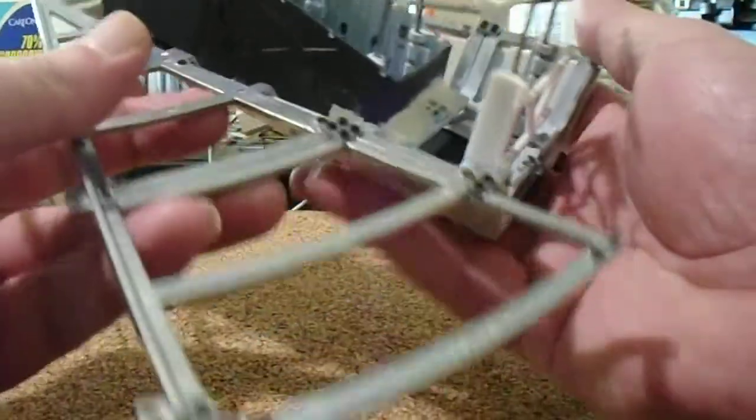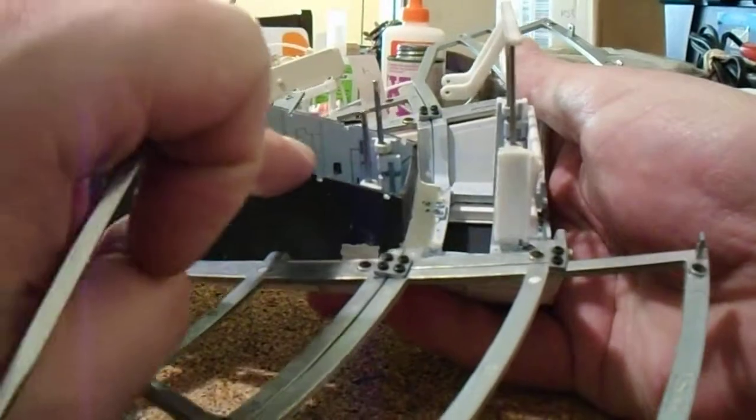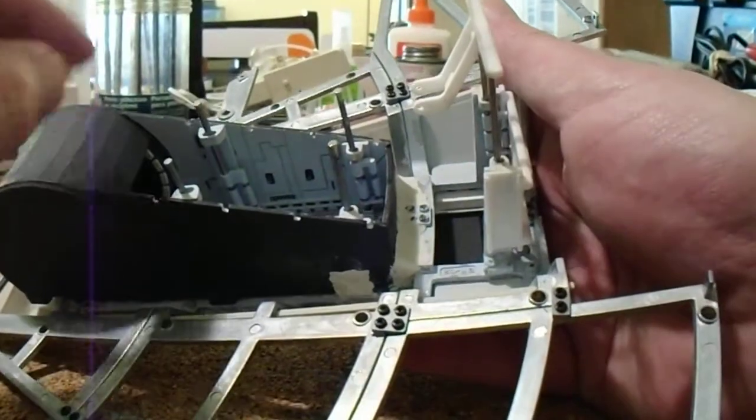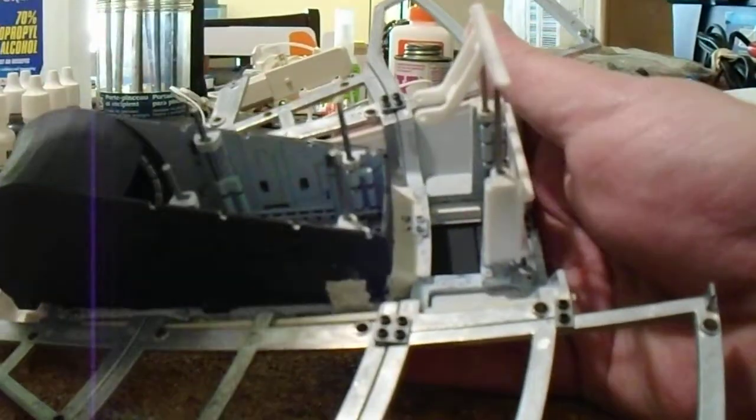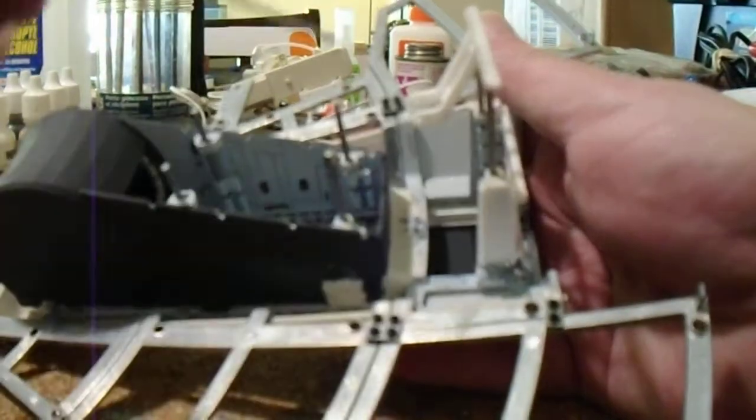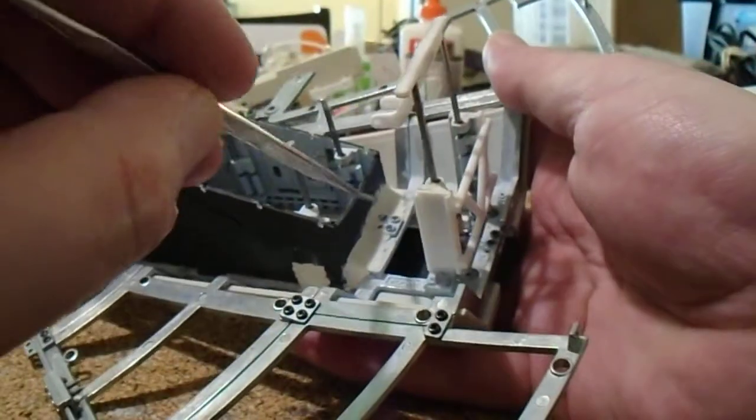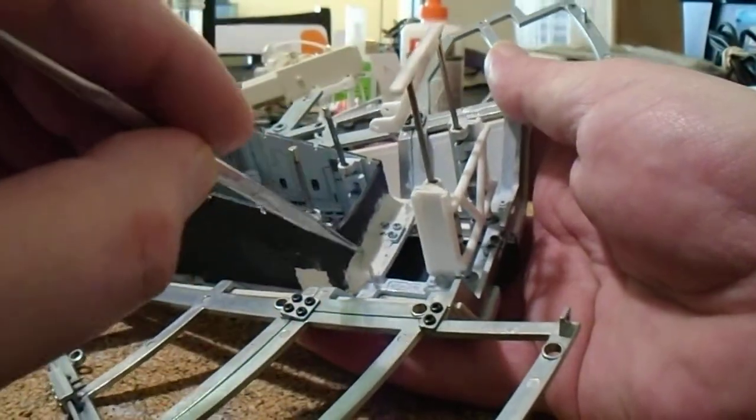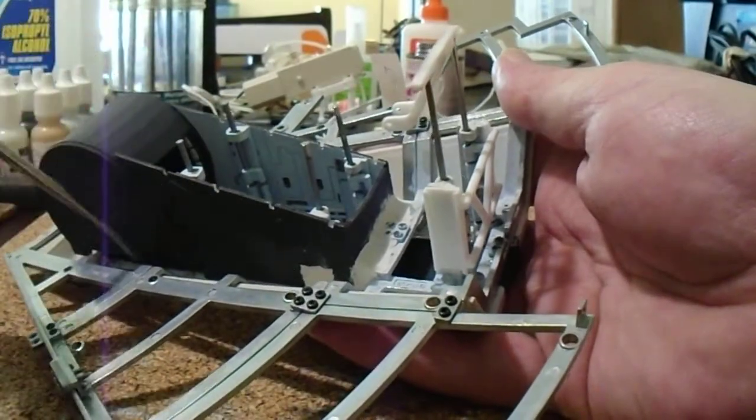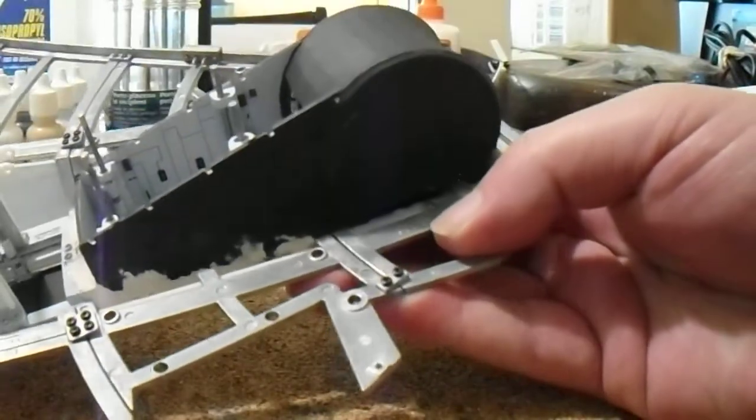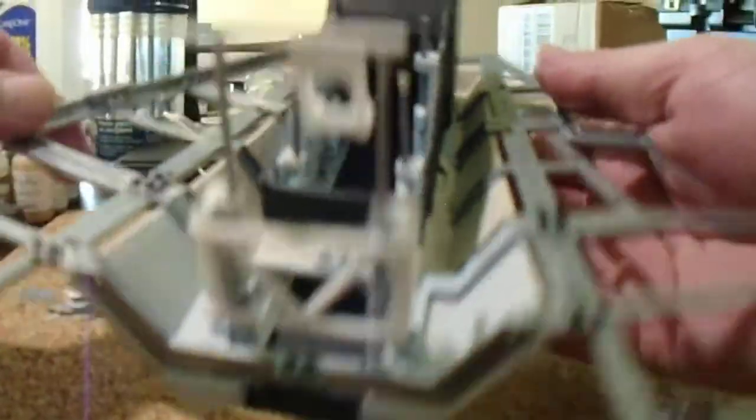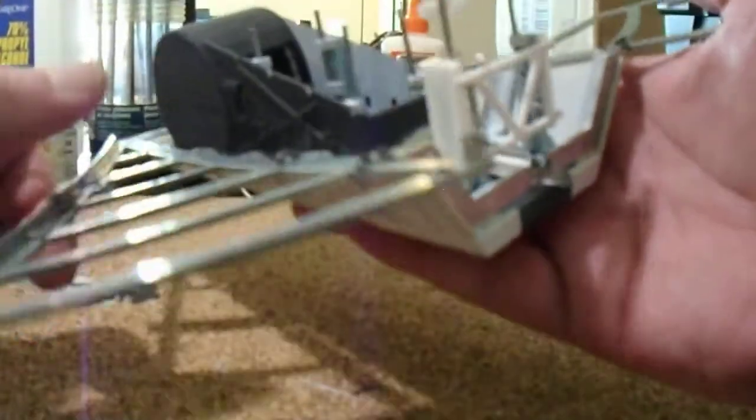We last left off gluing the hallway and curved corridor to the metal frame. That's done. Now we need to make sure these areas are light blocked with body filler, modeling putty, or gap filling glue. I've done most of that for the purpose of this video. It's not complete but I want you to get the idea.